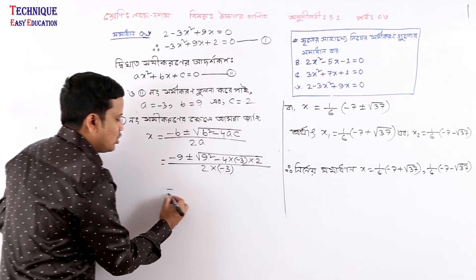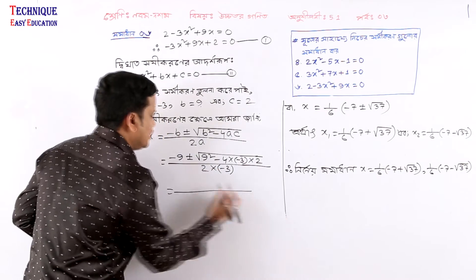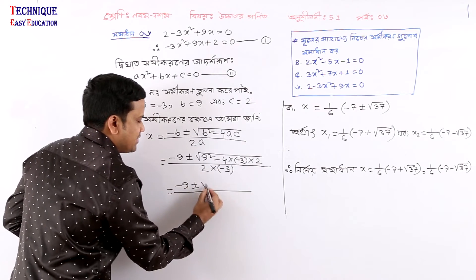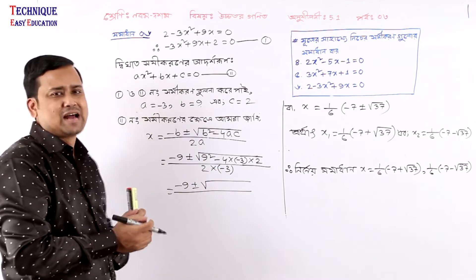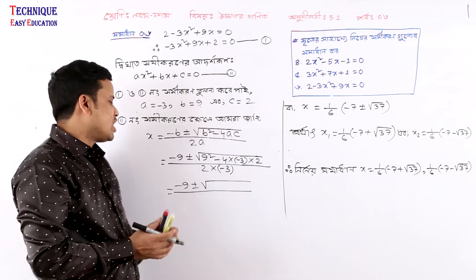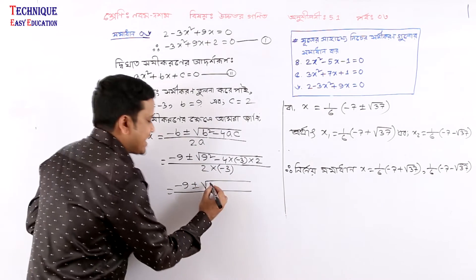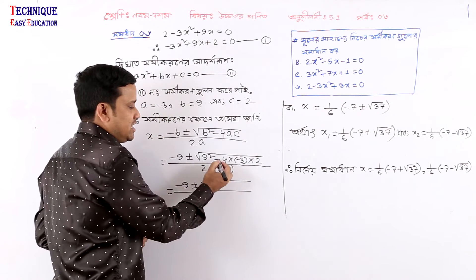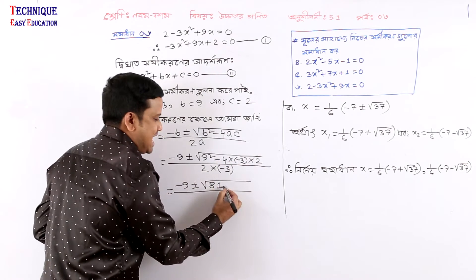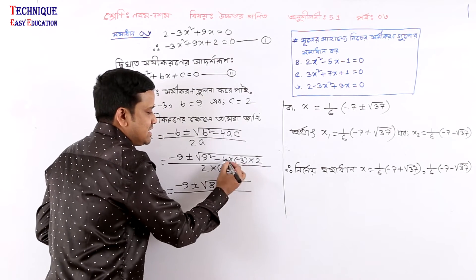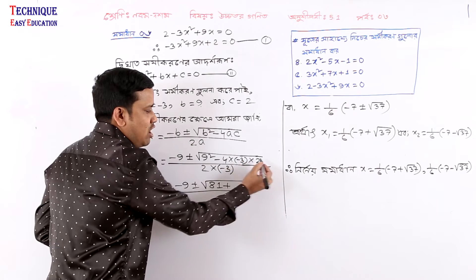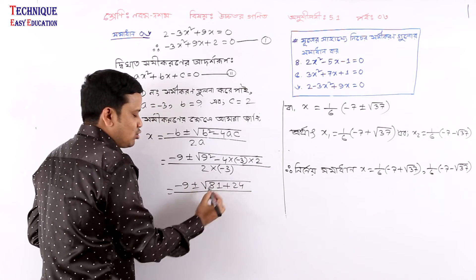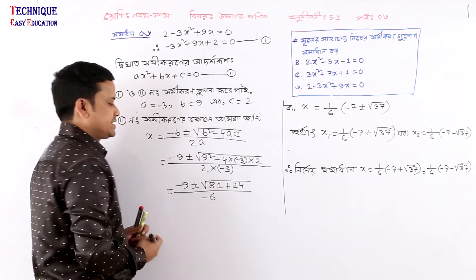Now, minus 9 plus minus 9. Computing: 9 squared is 81, and 4 times a times c is 4 times minus 3 times 2 equals minus 24. So minus 8, minus 12, plus 24, and minus 12, minus 6.